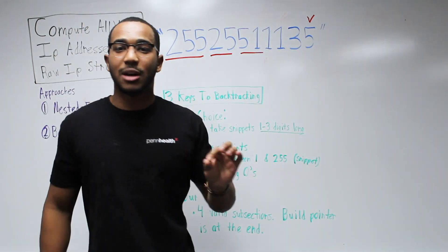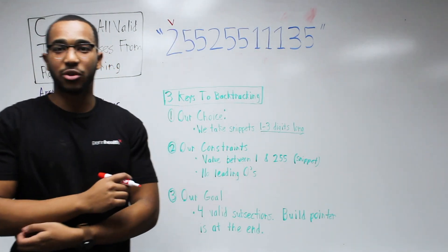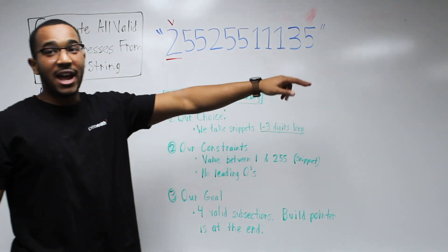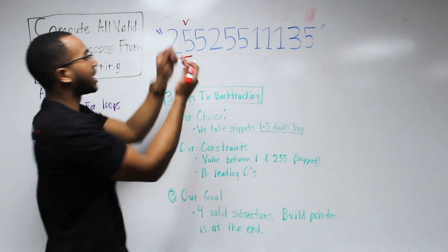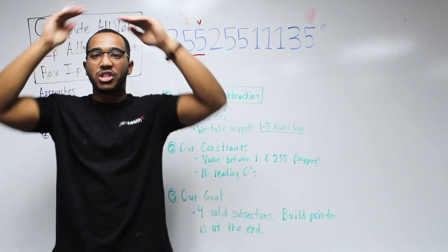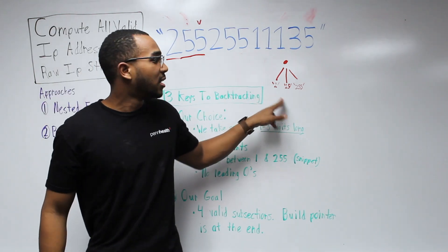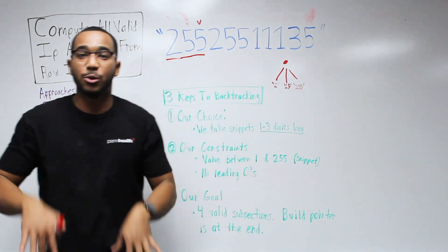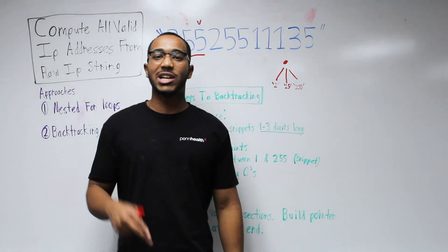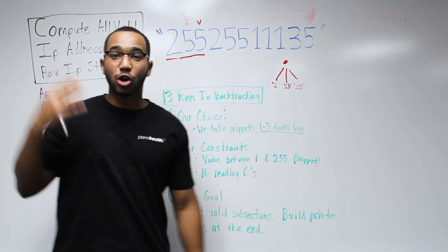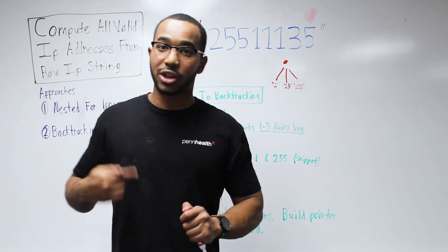We've exhausted all subsections up to the pointer. When we start, our build pointer is at position zero and we take a snapshot of length one, then explore all recursion on that. When we backtrack to the top layer, we take a snapshot of length two and then three — so our first level of recursion produces three branches. It's like a tree: first choice '2', next '25', next '255', branching downward. Our choice is snippets, our constraints are value and leading-zero rules, and our goal is four valid subsections with the build pointer at the end.